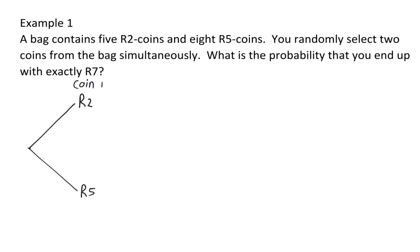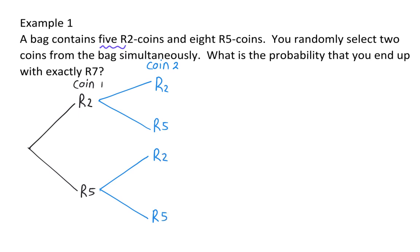It can either be a two-rand or a five-rand. The second branch will then be for the second coin removed, and this will also have the option of being a two-rand or a five-rand. Next, we need to go and add the probabilities. There are five two-rand coins and eight five-rand coins, so there are thirteen coins in total. For the first coin to be a two-rand, there are five out of thirteen possibilities.